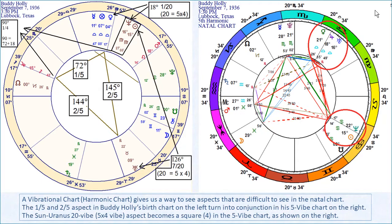The 20-vibration aspects — the Sun seven-twentieth Uranus and Venus one-twentieth Neptune — have the same denominator. 20 equals 5 times 4, so we see the Sun at 15 Libra tightly square Uranus at 16 Libra, and Neptune at 22 Cancer square Venus at 21 Libra. This is a spreading configuration of two planets square three planets, but not all within orb. Mars is in opposition to at least two or more of these planets. When some planets connect with some but not all, we call that a spreading pattern.